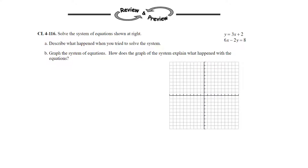Hello. This video is on the closure questions for chapter 4, problems 116 to 125. We're going to solve the system of equations shown at the right, describe what happened when we tried to solve the system, then we'll graph the systems of equations, and then discuss how the graph of the system explains what happened with the equations.